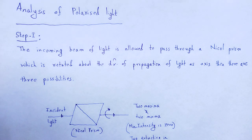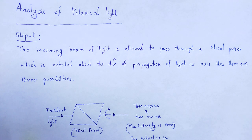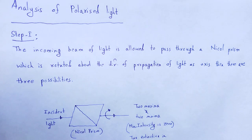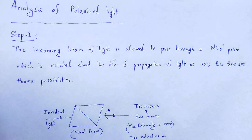We can analyze the polarized light by using a Nicol prism. The Nicol prism is used as an analyzer as well as a polarizer. In this session, we discuss what is the nature of the polarized light — what type of polarized light we observe through the Nicol prism. By using the Nicol prism as an analyzer, we can detect the nature of the polarized light.